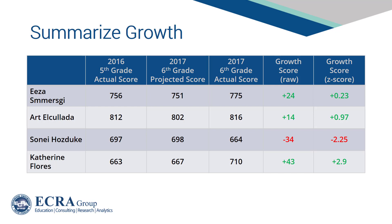That said, developing a growth score for a group of students starts at the individual student level. Based on a student's prior score, a projected score is produced. The difference between a student's projected and actual score produces a raw growth score. Raw growth scores are typically standardized, sometimes via z-scores, to arrive at a growth score that is comparable across all subjects and grade levels, allowing for a single growth summary score to be produced for a building or group of students.